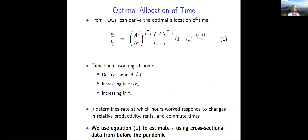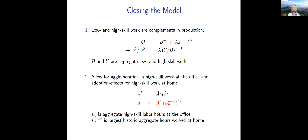From the first-order conditions of this model, we derive the optimal allocation of time between work at the office and work at home. It depends on relative total factor productivity, relative rents, commuting costs, the elasticity of substitution, and the share of space in production. This equation is what we use to estimate the elasticity of substitution using cross-sectional data from before the pandemic. Low and high-skill workers are complements in production.